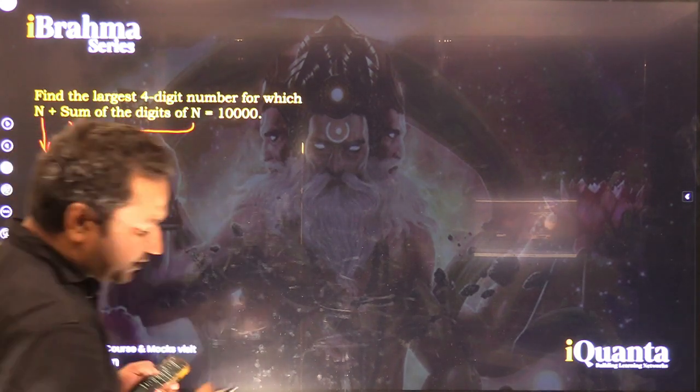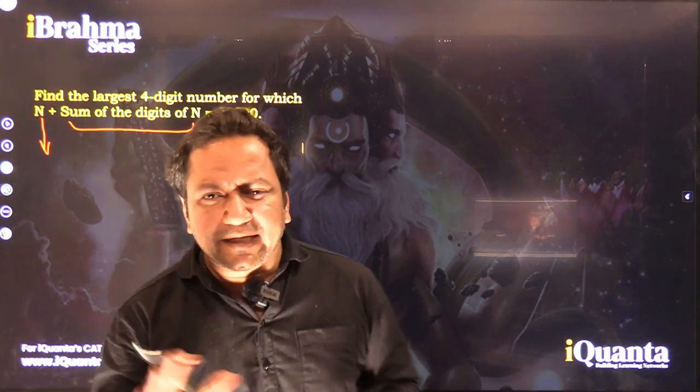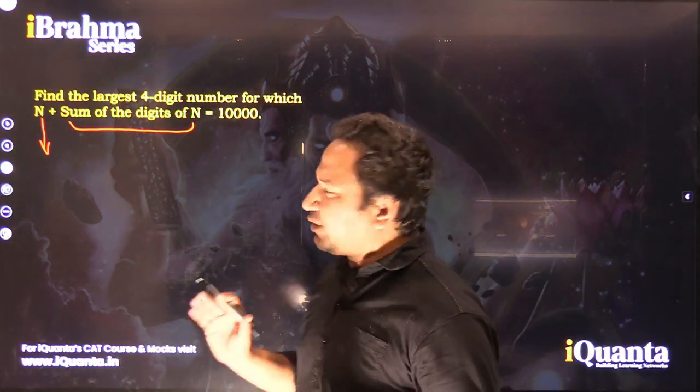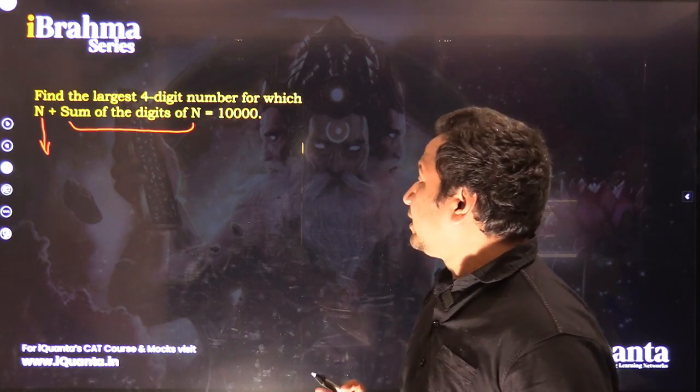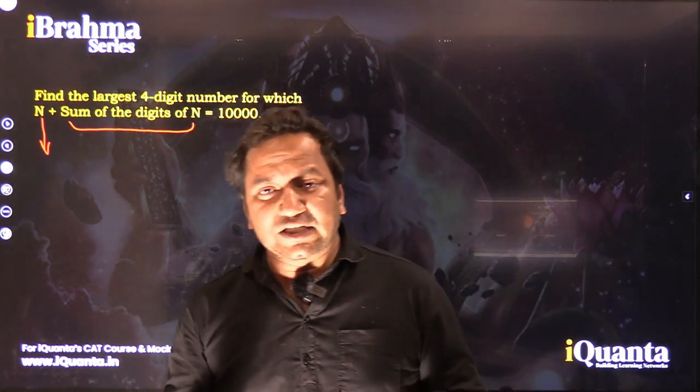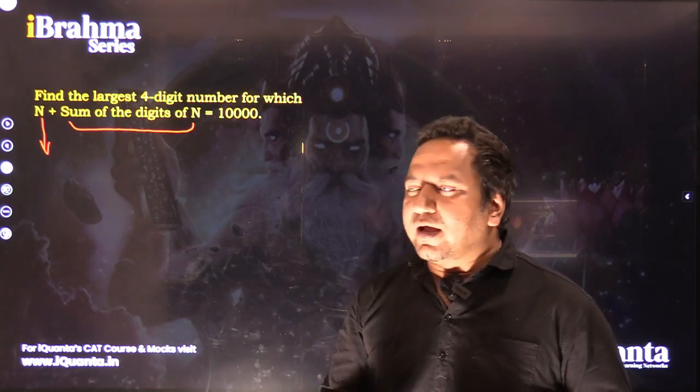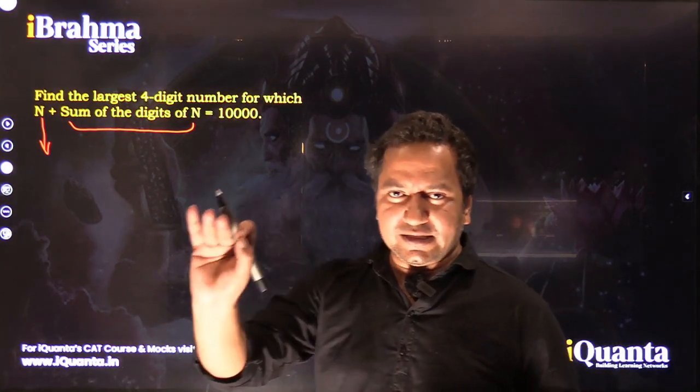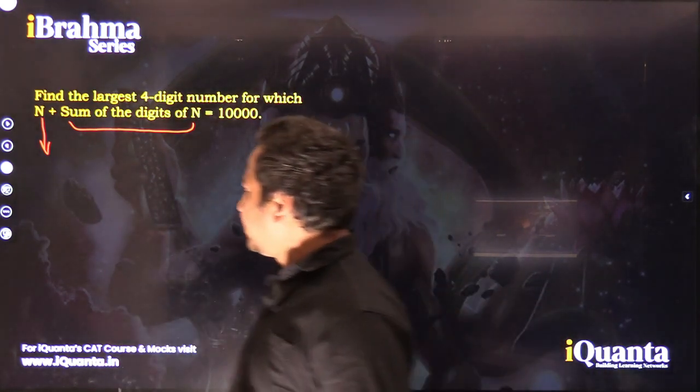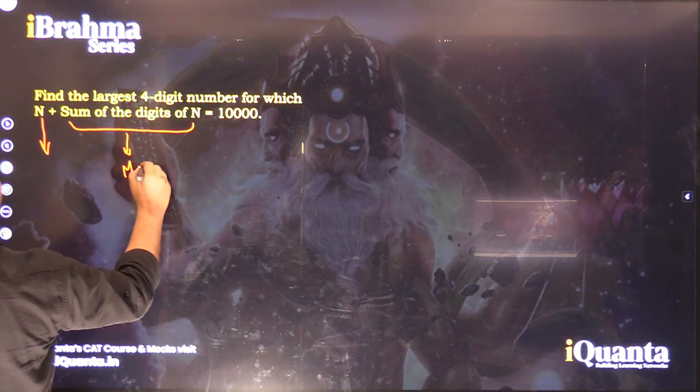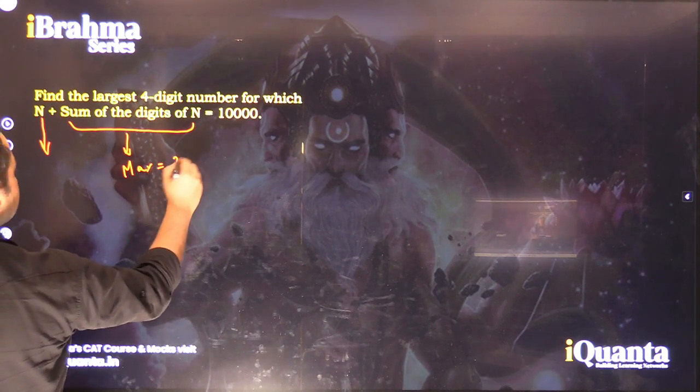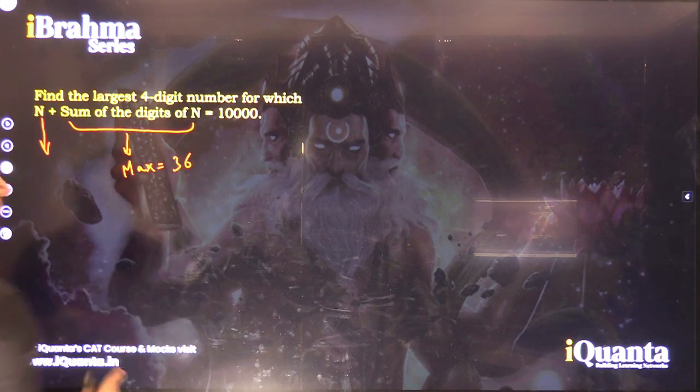If you think about it, what can be the range of the four-digit number? We know the largest four-digit number is 9999, and the sum of its digits is 9 + 9 + 9 + 9 = 36. That means the maximum sum of digits can be 36.